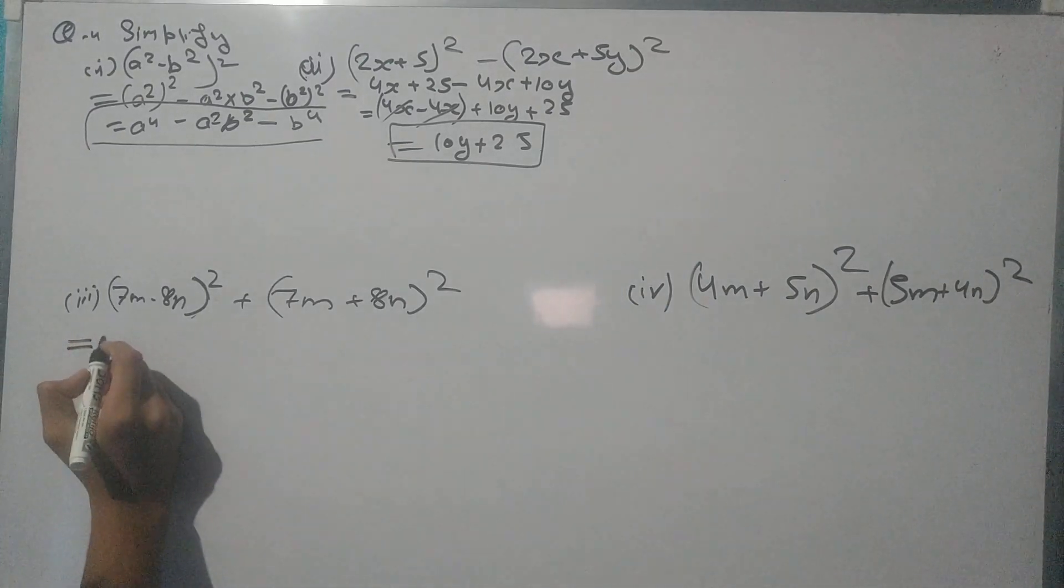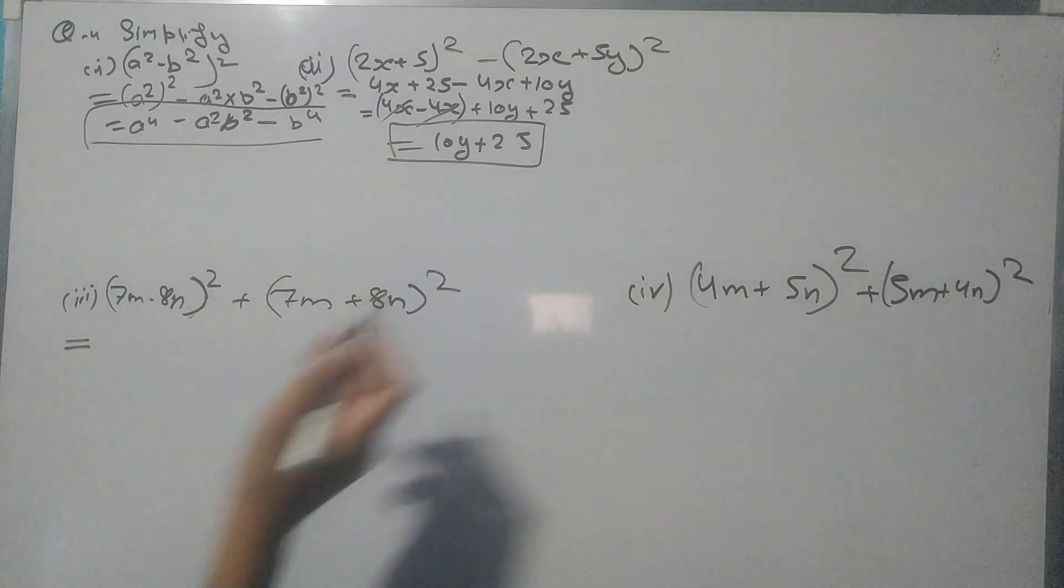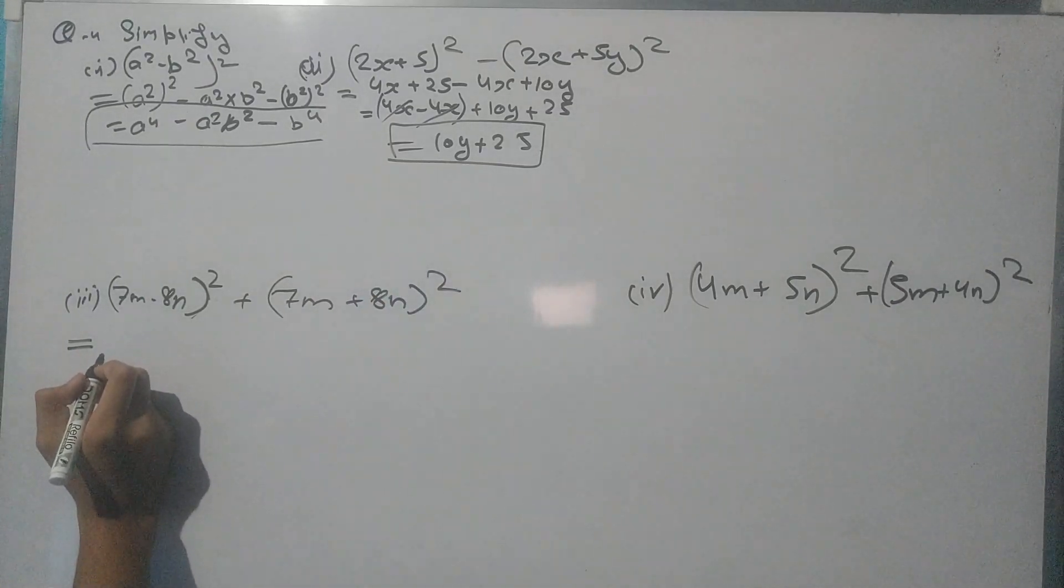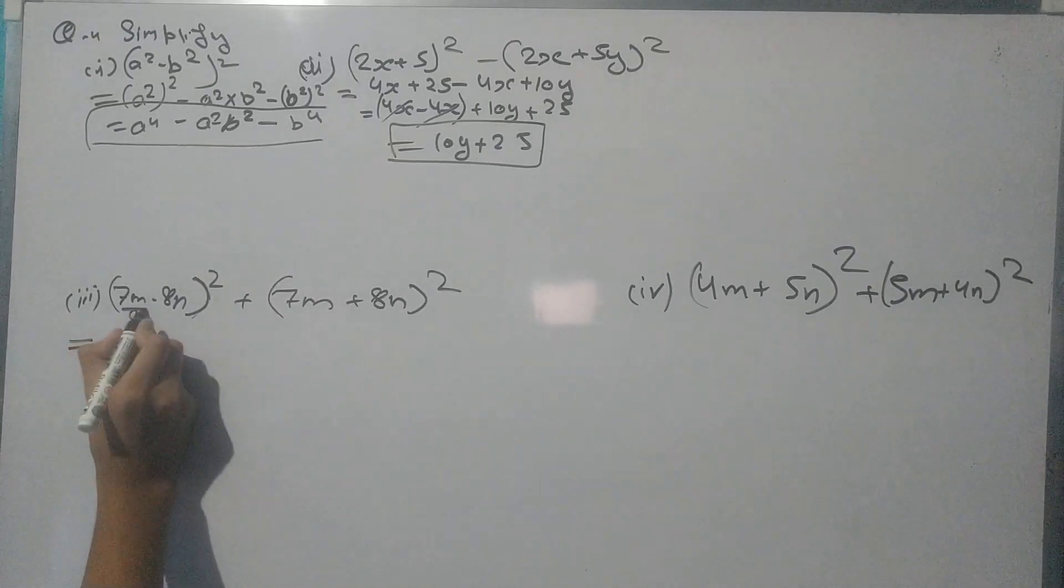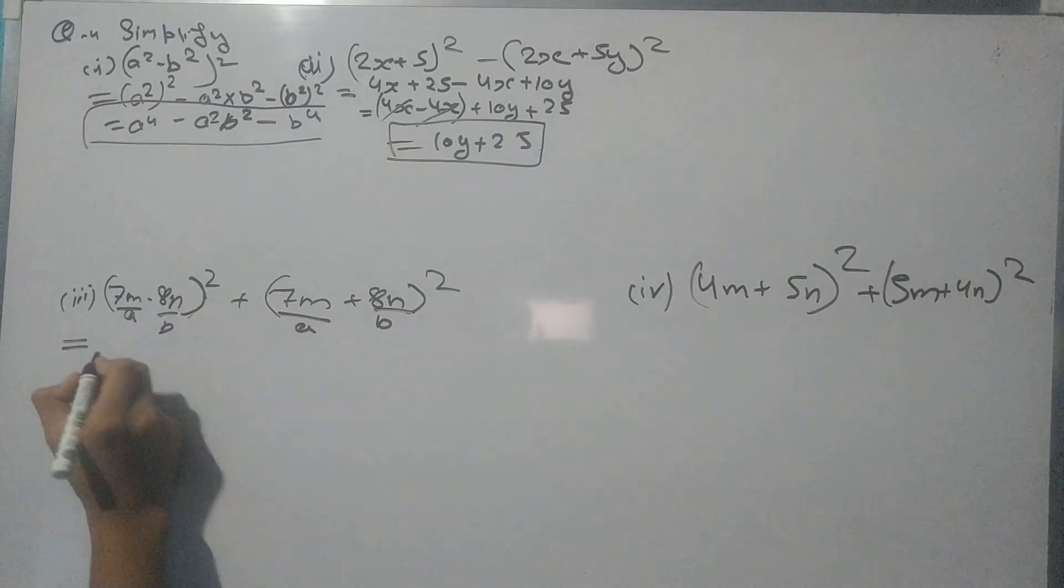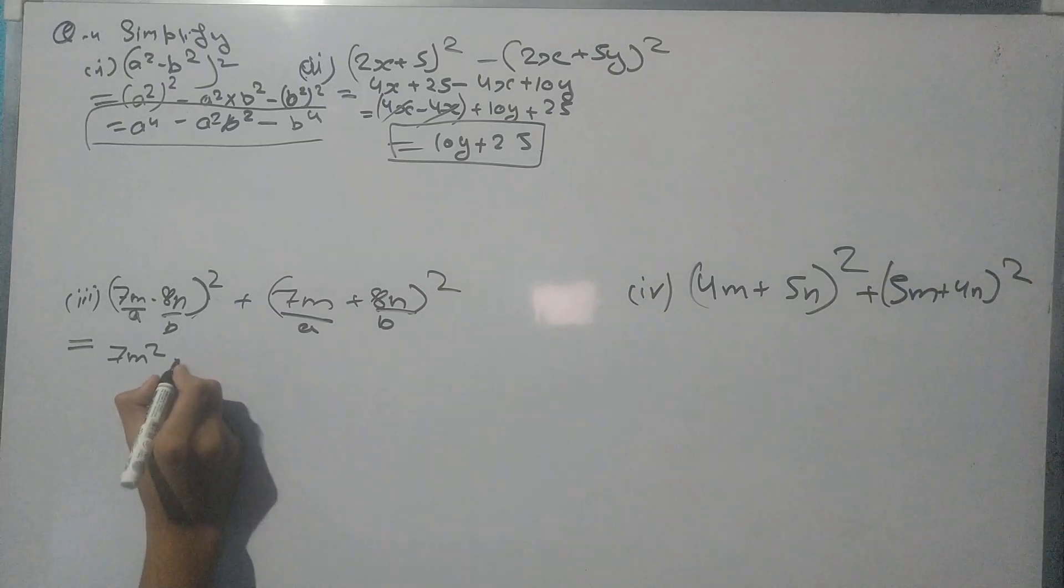Now let's come to the third part. In this part we have (7m - 8n)² + (7m + 8n)². So let's solve using the identity a² - b².